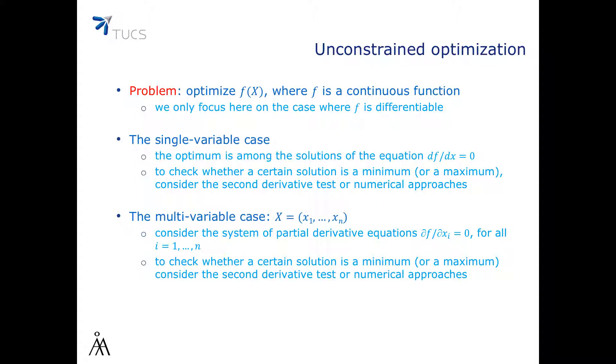The multivariable case is where we have several variables x1 to xn. In this case, we will consider the system of partial derivative equations, df/dxi = 0 for all i from 1 to n. And to check whether a certain solution is a minimum or a maximum, we have to look at the second derivative or simply just simulate or numerically integrate around these points.